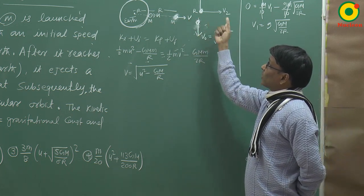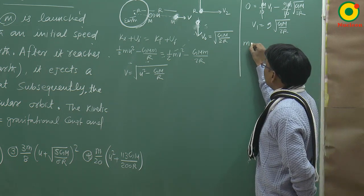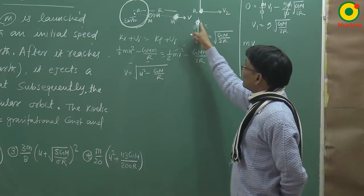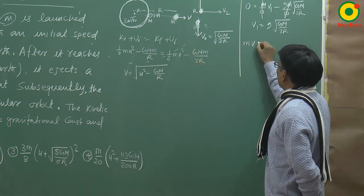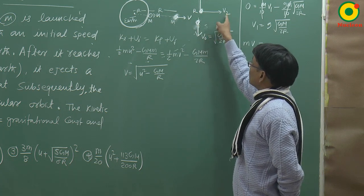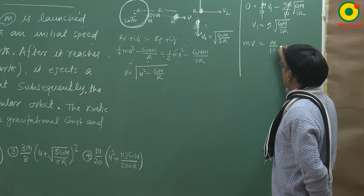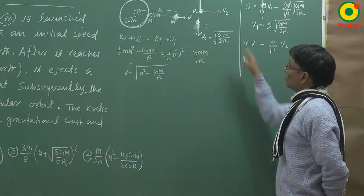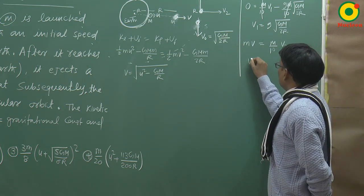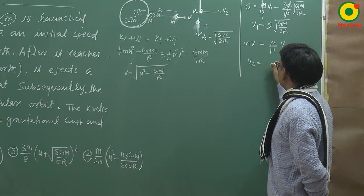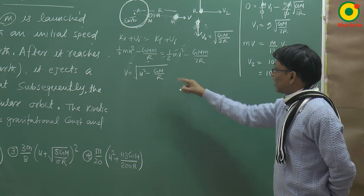Now applying momentum conservation in the radial direction — just before and just after the split. Initially, total momentum was m·V in this direction. After splitting, only the rocket has velocity V2 in this direction with mass m/10. So (m/10)·V2 = m·V, giving V2 = 10V = 10√(u² − GM/R).